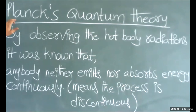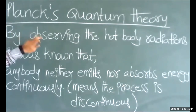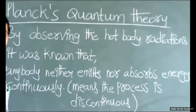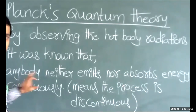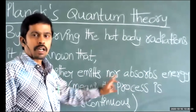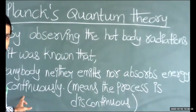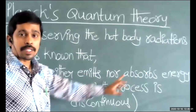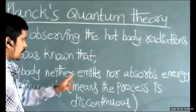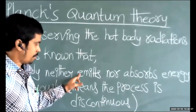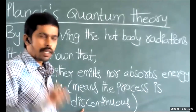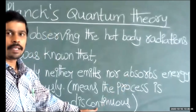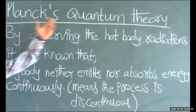Max Planck proposed this theory by observing hot body radiations. What he observed: if any hot body is taken, it neither emits nor absorbs energy continuously. The emission of energy by a hot body is discontinuous, or the absorption of energy by a hot body is discontinuous. This was proposed by Max Planck in his theory — Planck's quantum theory.